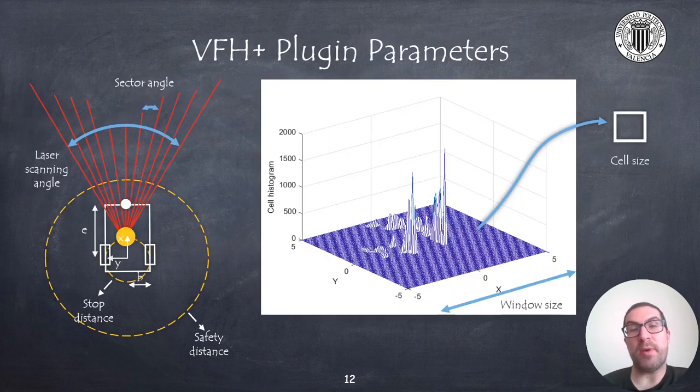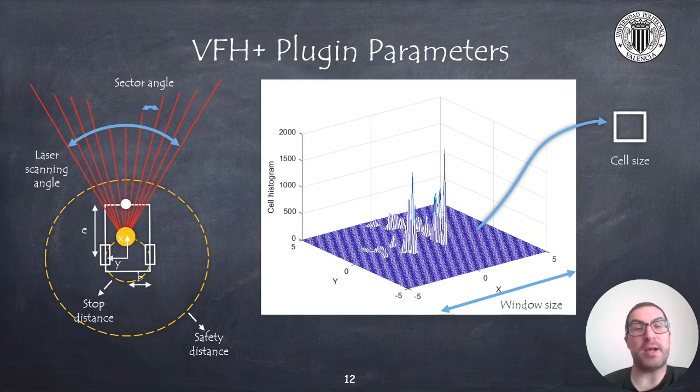Here, I explain some of the parameters that are required by the plugin. The laser scanning angle determines the field of view of the algorithm, so all possible directions that we will compute within this algorithm have to be inside or within the range of this parameter. And also, the sector angle will determine somehow the number of sectors that the algorithm is using, and hence the size of the histograms.